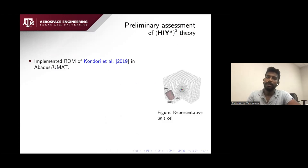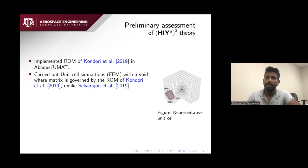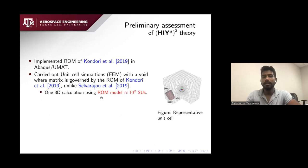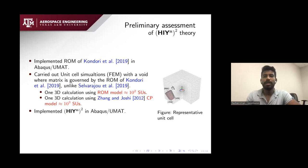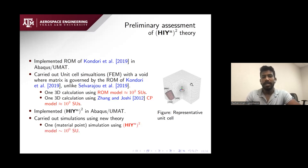The reduced order model of Babak Kandori is implemented in Abaqus UMAT, and we carried out unit cell simulations with voids where the matrix is governed by the reduced order model instead of the actual crystal plasticity model. The reduced order model saves computational cost: one 3D calculation using the reduced order model costs around 10² SUs, the corresponding crystal plasticity model costs around 10³ SUs, whereas our new theory that accounts for both void and magnesium plasticity takes about 10⁰ SUs — essentially running in a minute.